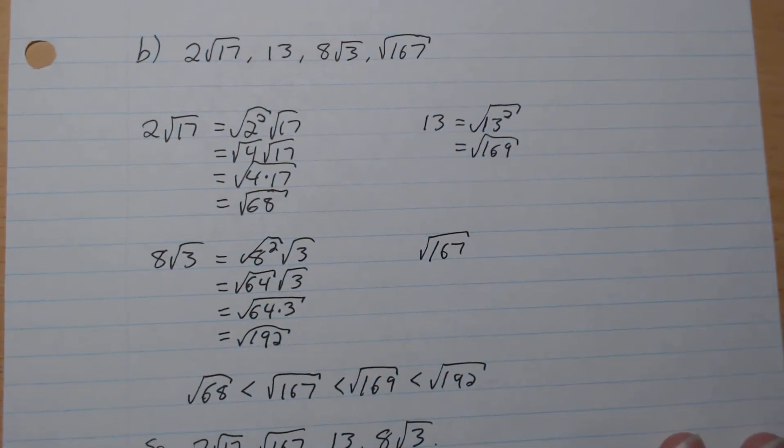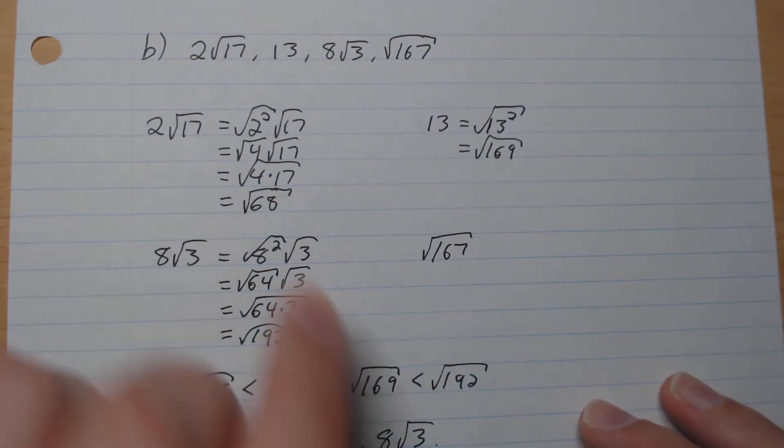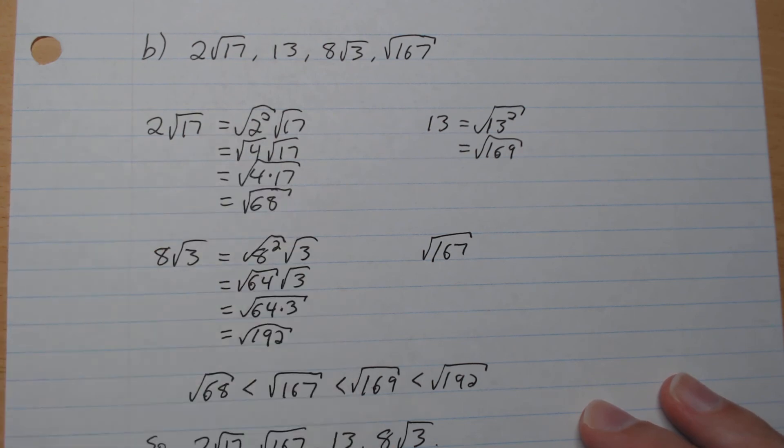Okay, B, 2 root 17, so square square root like that, this gives us root 68.